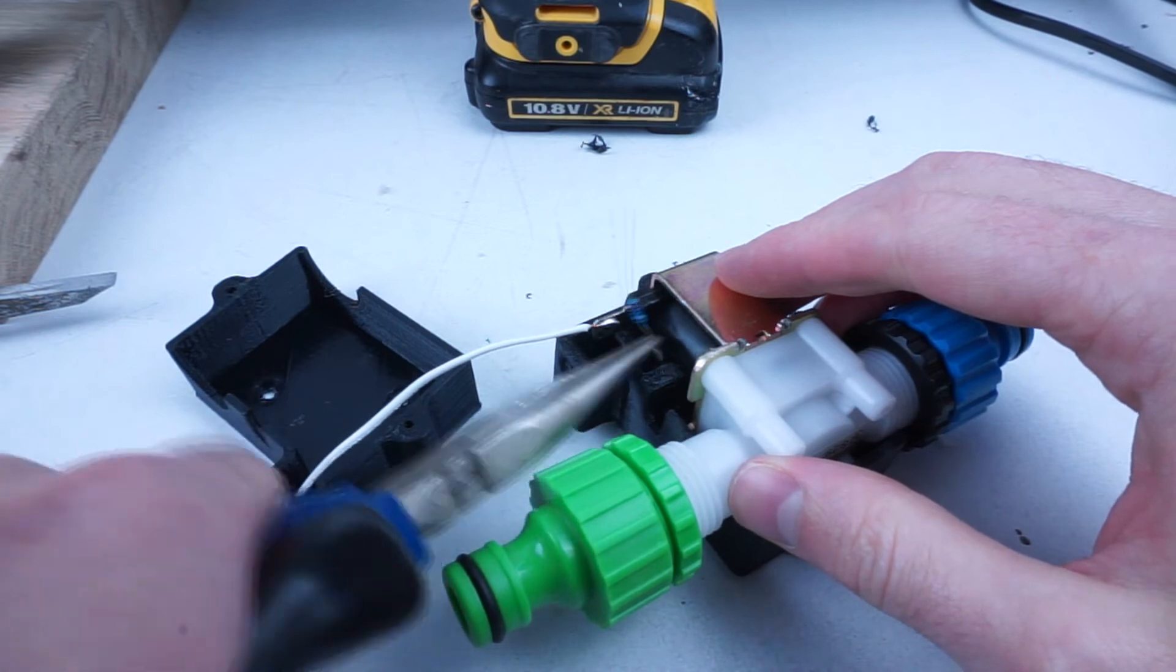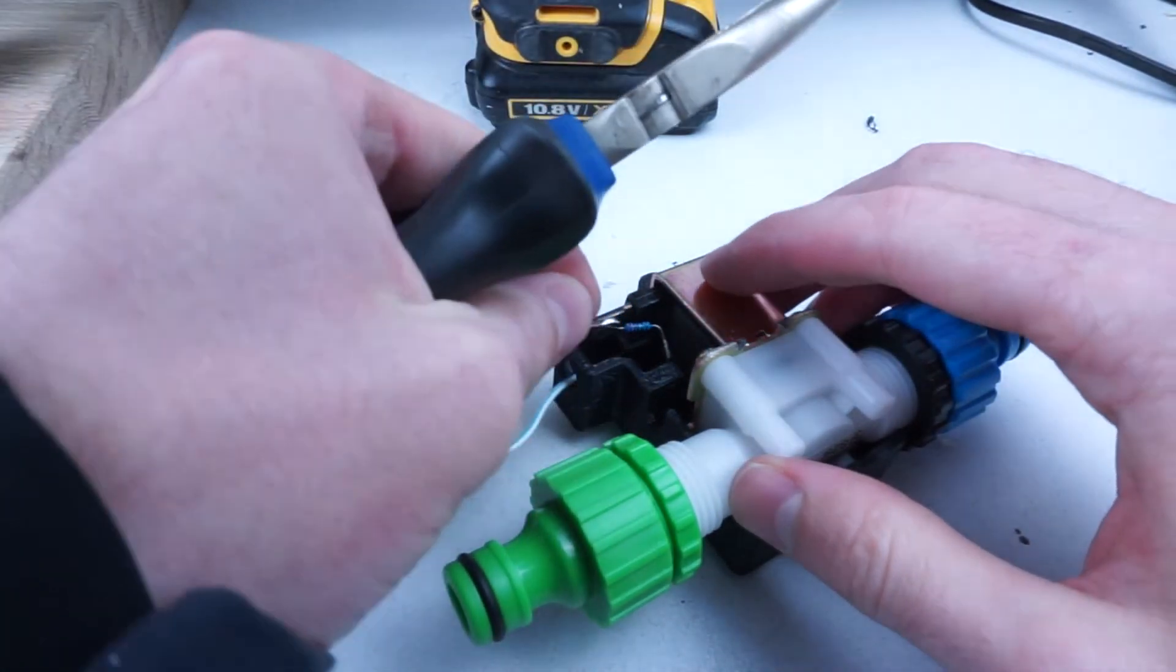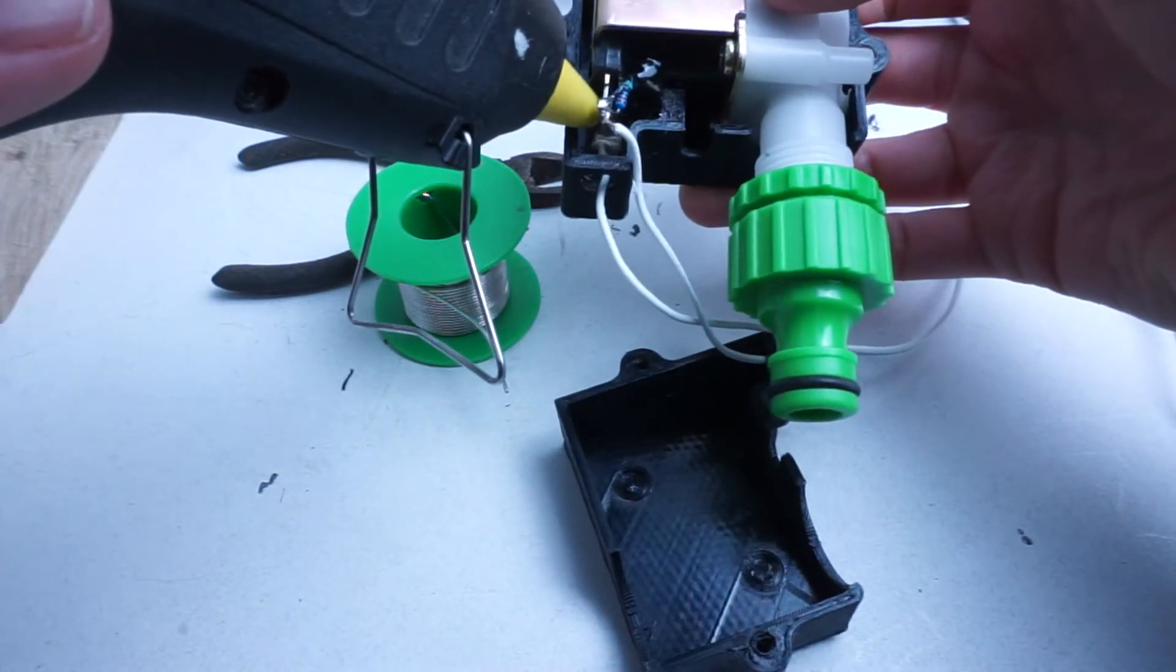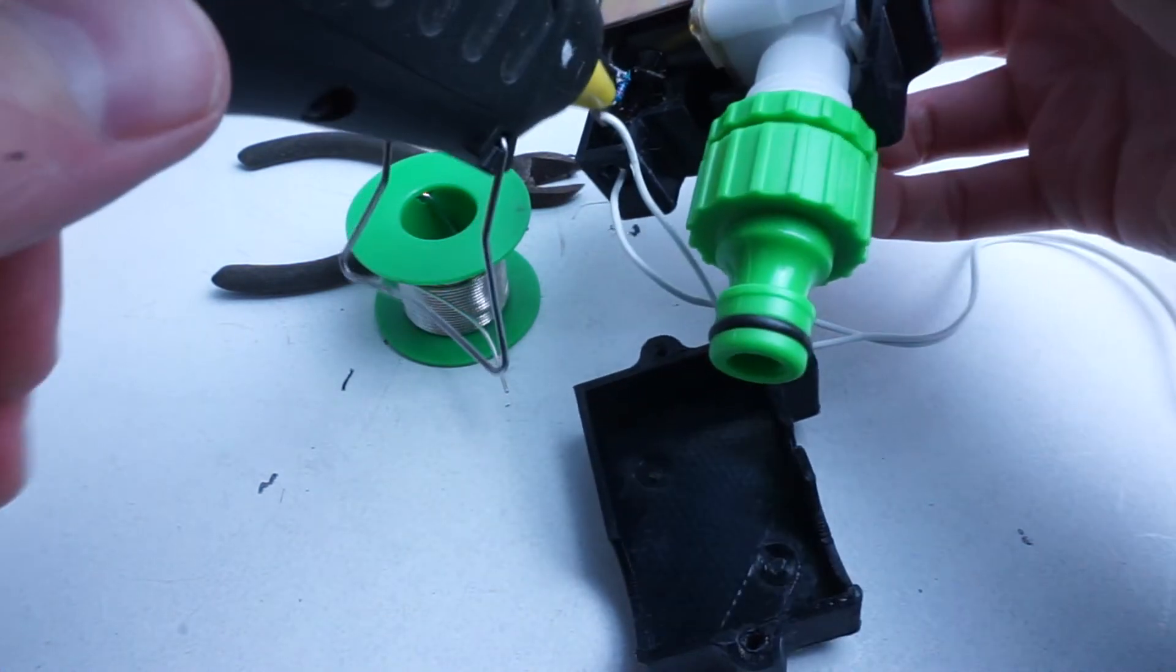Hot glue was used to secure the LED and give some means of weather protection to the solenoid's contacts. Applying 12 volts to the contacts will cause the LED to illuminate and the valve to open.